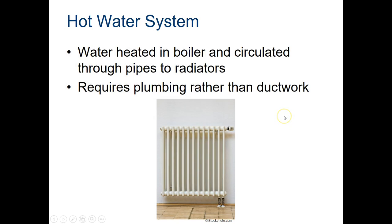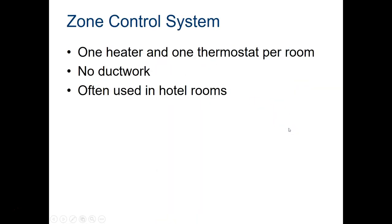Another way to do this: in older houses from the 1800s up through the 1920s, 30s, and 40s — and starting to fade in the 50s — was a hot water system. Water is heated in a boiler and circulated through pipes to radiators throughout the building. It requires plumbing rather than ductwork — you're moving hot water around the building, not blowing air. The hot water or steam comes up into the system, passes through the radiator fins, and literally radiates heat out into the room.